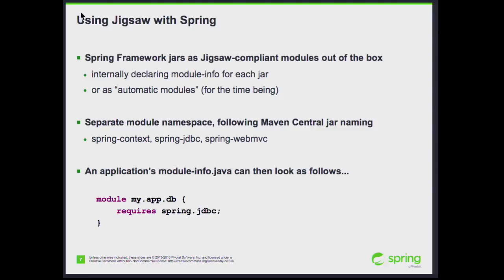The hardest part in a module system is the common case — basically, you have to agree on what the 80% case is, and there is no proper agreement on that yet. Whether, for example, a given descriptor means there are no public types exported or that everything is exported by default — there are still arguments about this. And there shouldn't be; we're now almost in October and they intended to release this in March. From a Spring perspective, we had to do a little bit of fine-tuning for Spring to run fine on JDK 9, and we have a CI build testing every night against the latest JDK 9 build.